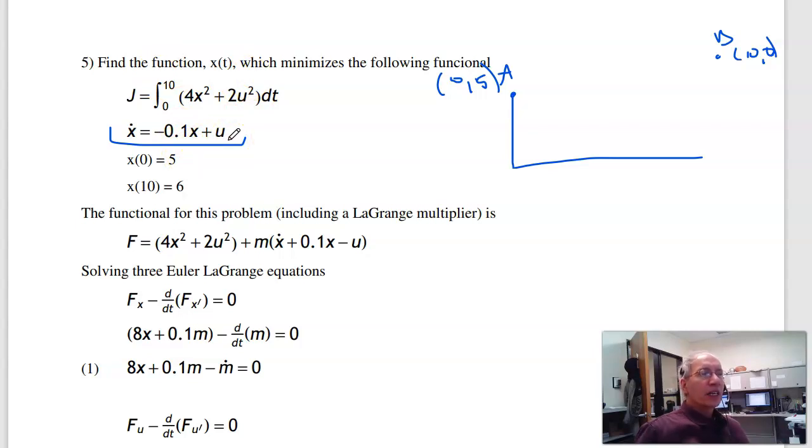Well, to do that, I use the Euler-Lagrange equation. Any solution has to satisfy the Euler-Lagrange equation. My functional would be 4x² + 2u² plus, bring everything left and set it equal to 0. If that's equal to 0, I can always add or subtract 0 and not change anything, times the Lagrange multiplier. That's actually my cost function, my functional that I'm trying to minimize.